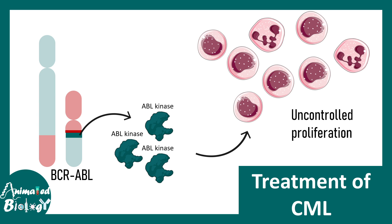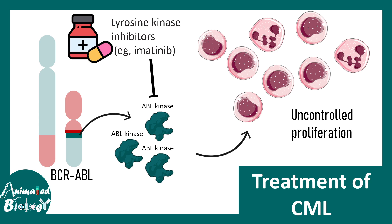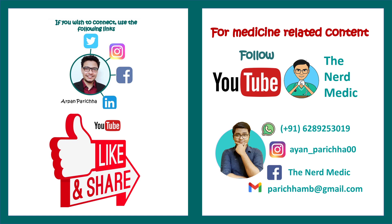BCR-ABL produces too much ABL kinase, which is the culprit of uncontrolled proliferation. Once scientists understood this biology, they could formulate treatment. The main treatment is using a tyrosine kinase inhibitor such as imatinib, which inhibits the ABL kinase and reduces the proliferation rate. In this video we understood what the Philadelphia chromosome is and the biology associated with it.